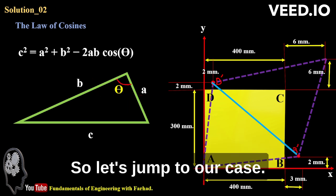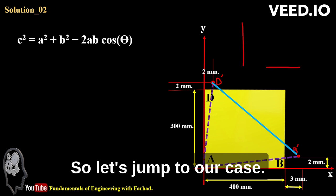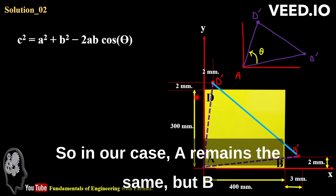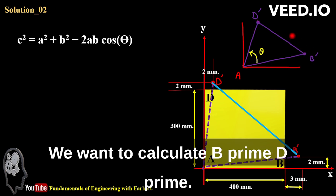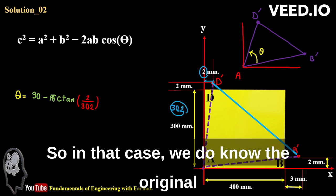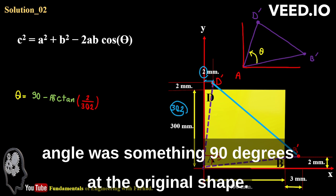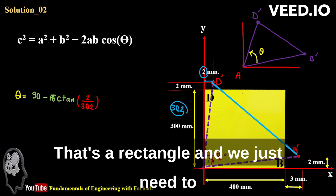So let's jump to our case. In our case, a remains the same, but b moves to b prime and d moves to d prime. We want to calculate b prime d prime. We know the original angle was 90 degrees at the original shape, that's a rectangle. And we just need to subtract these two small angles from 90. So we know theta should be a little bit smaller than 90 degrees.